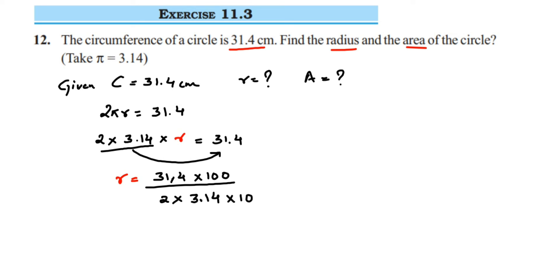We cancel 314 from numerator and denominator, and cancel 10 and 100 — since 10 ones are 10, 10 tens are 100, and two ones are 2. Therefore, we get radius equal to 5 centimeters.